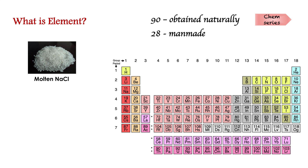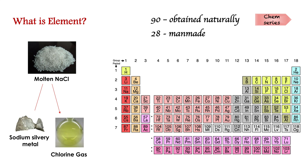So what is an element? It is a substance that cannot be decomposed into simpler materials by any chemical reaction — those substances are called elements. For example, when we take molten NaCl and pass electricity through it, sodium becomes a silvery-white metal and chlorine is liberated as a pale yellow gas. These elements cannot be decomposed further. Scientists have discovered 90 naturally occurring elements and 28 are manmade.